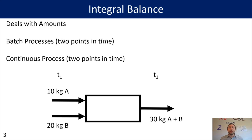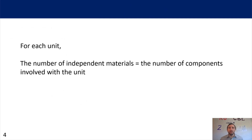Something to be aware of for each unit that we're working with is that the number of independent materials is going to equal the number of components involved with the unit. So in all those previous examples I gave you, I had two independent materials: material A and material B.